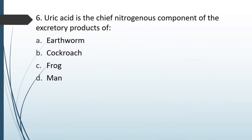Question No. 96: Uric acid is the chief nitrogenous component of the excretory products of: Option A — Earthworm, Option B — Cockroach, Option C — Frog, Option D — Man. The correct answer is Option B — Cockroach.